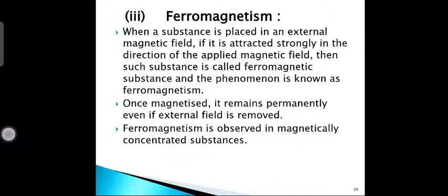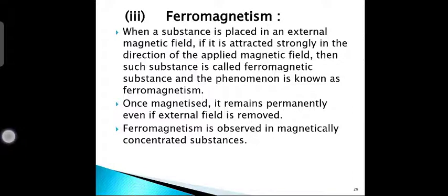There are many such domains in a ferromagnetic substance. The magnetic moments of these domains are oriented randomly in the absence of external magnetic field, and the resultant magnetic moment becomes zero. When it is placed in an external magnetic field, the magnetic moments of all domains start aligning parallel to the direction of the external magnetic field.